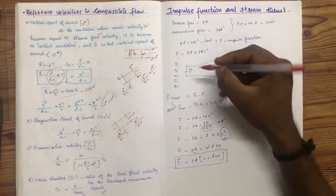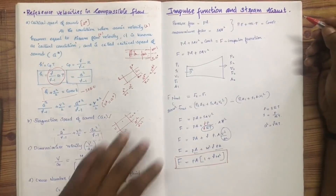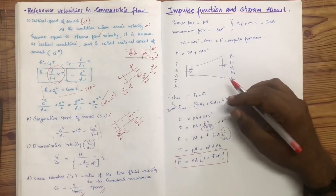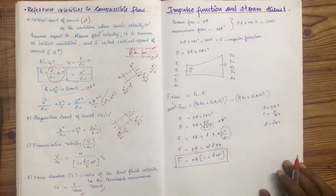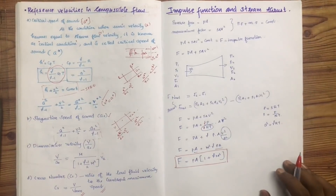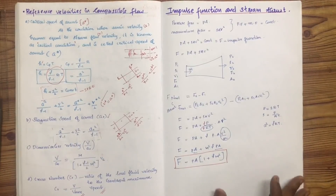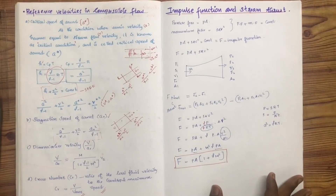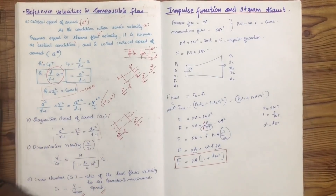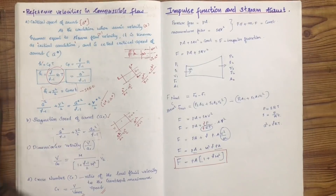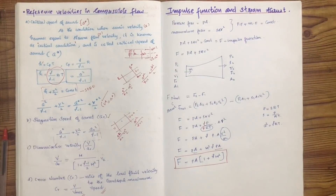This is the equation used for finding the impulse function at a particular point. The impulse function equals thrust at one point. We will cover the impulse function and thrust in the first module.